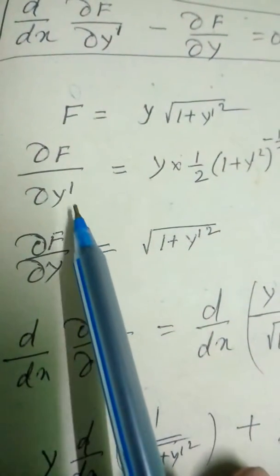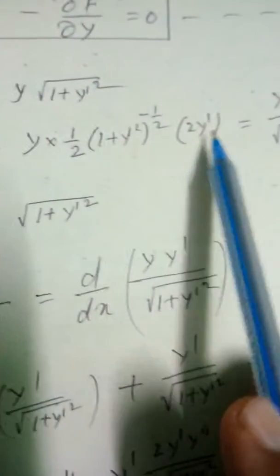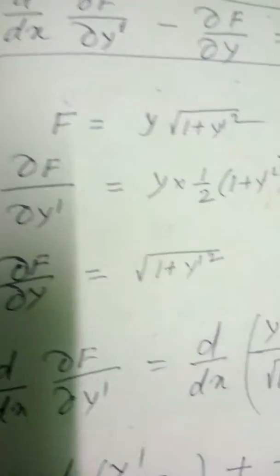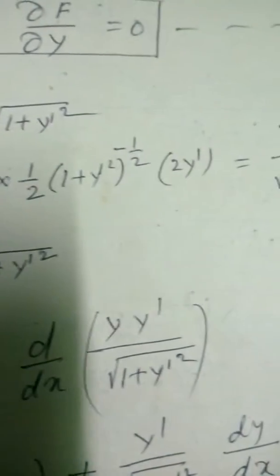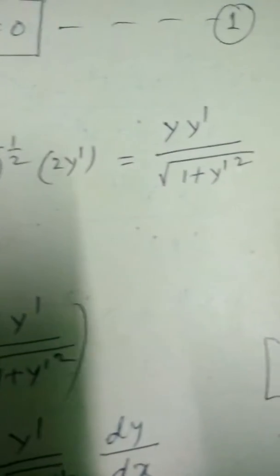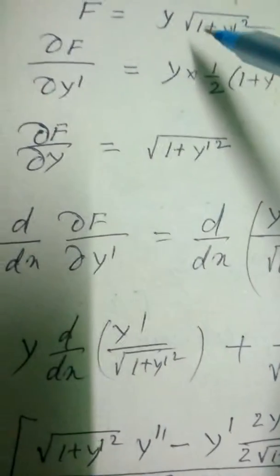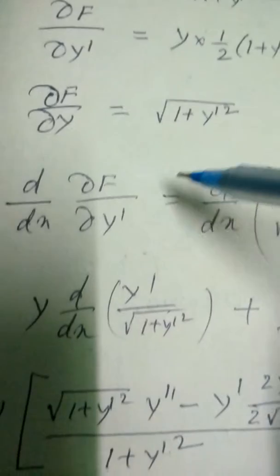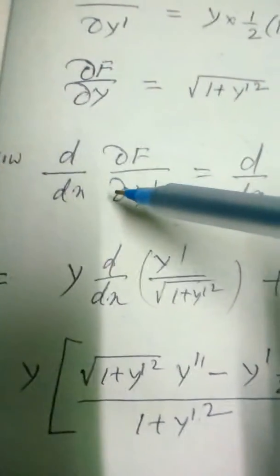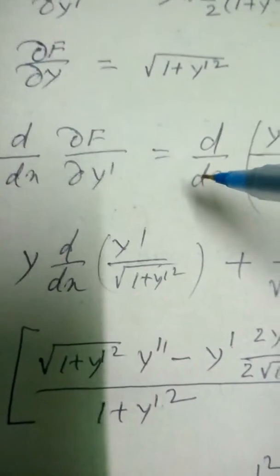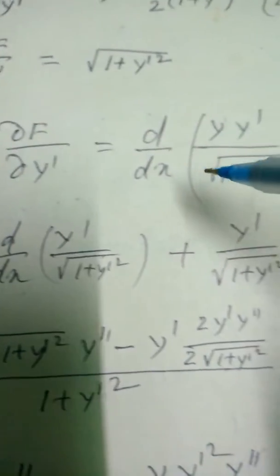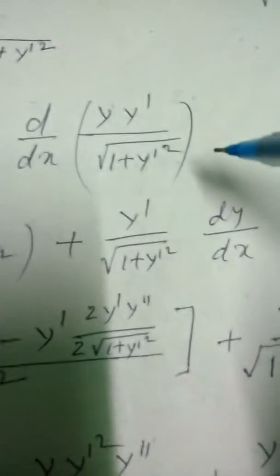Now, here, df/dy' is equal to this one. Okay. Now, df/dy - y is here, so it is this one. Okay. So I put it in equation one. That is the Lagrange equation.